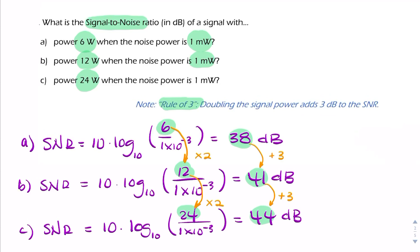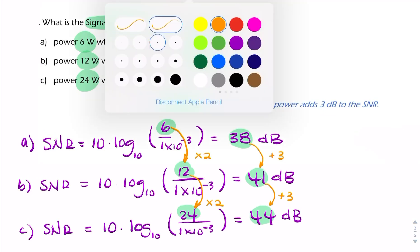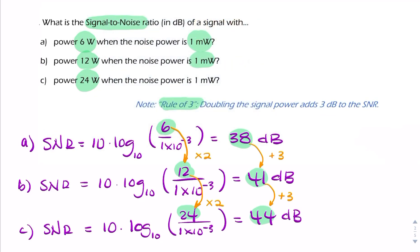And the opposite is also true. If you were to halve the signal power, then you would be reducing the SNR by 3. And if you were to halve the noise power, then you would be increasing the SNR by 3. So this is a handy little rule of thumb that you can use to solve this kind of question.